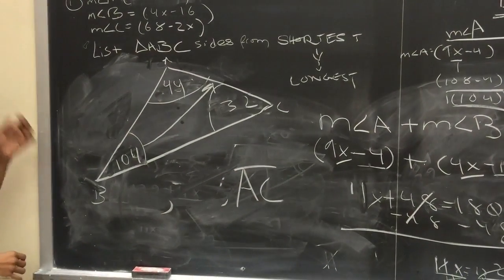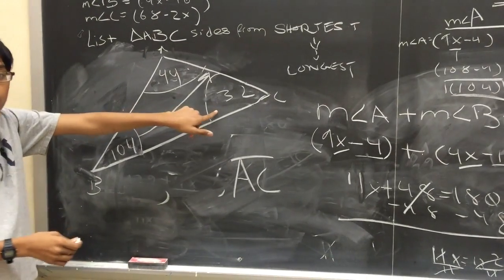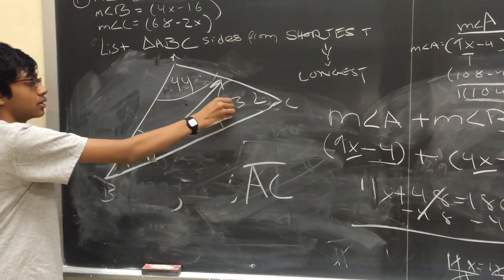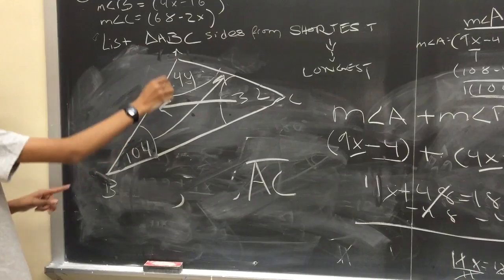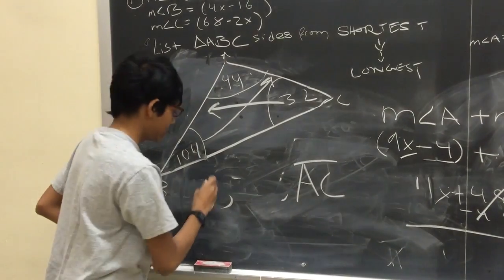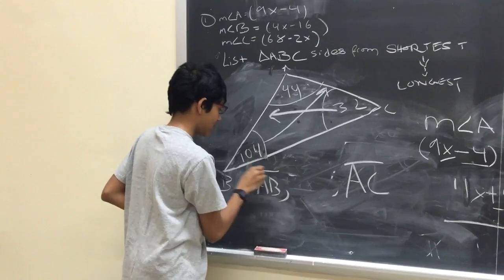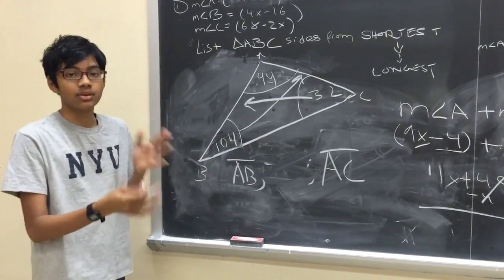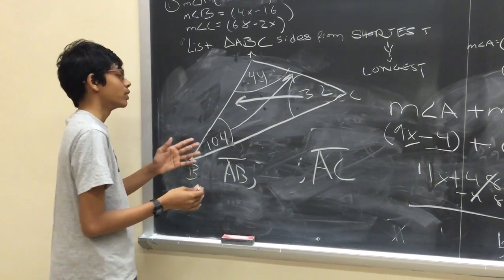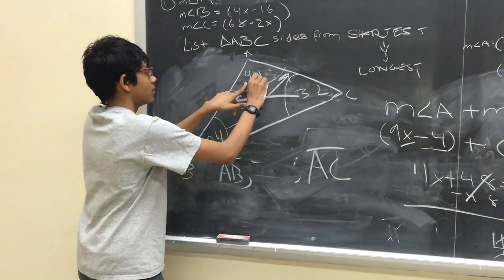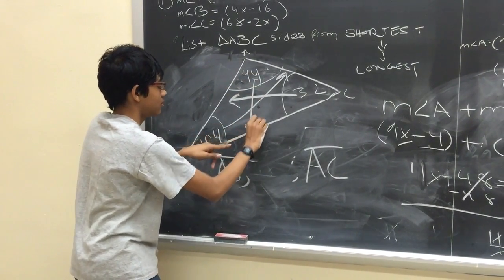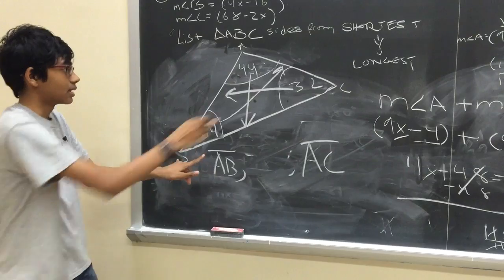The shortest side is adjacent to the shortest angle, which turns out to be side AB. And of course, the side in between, the medium side, would be... It follows that it would be adjacent to the medium angle, which turns out to be BC.